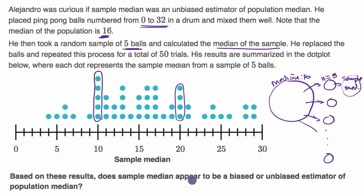Now to judge whether it is a biased or unbiased estimator for the population median, pause the video and see if you can figure that out. All right, now let's do this together. To judge it, let's think about where the true population parameter is. The population median is 16, and so that is right over here, the true population parameter.